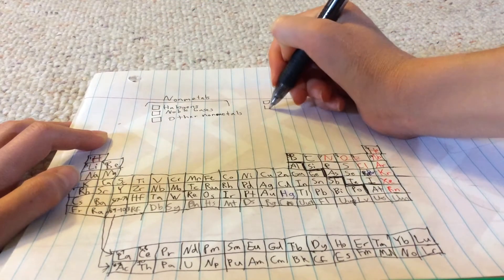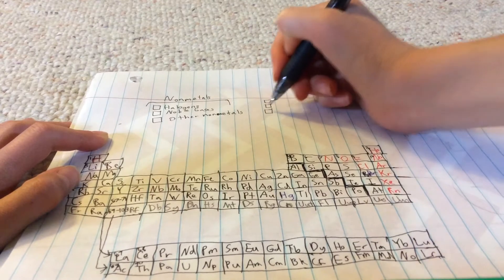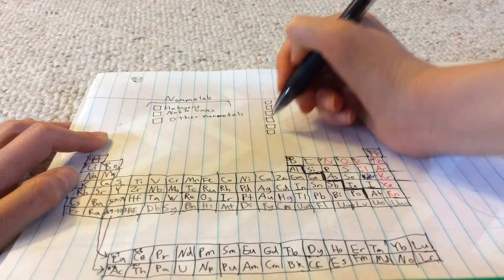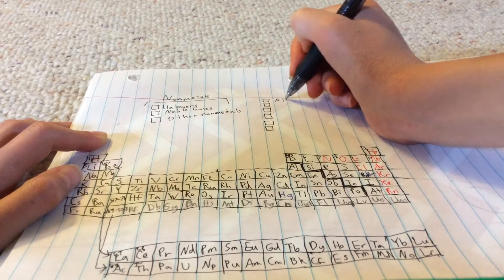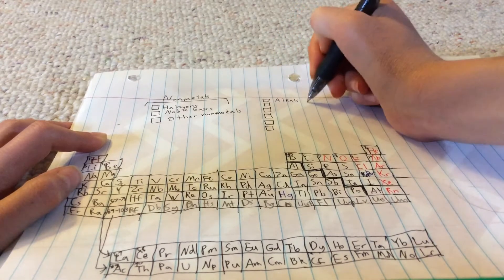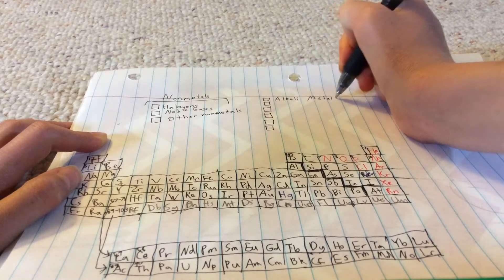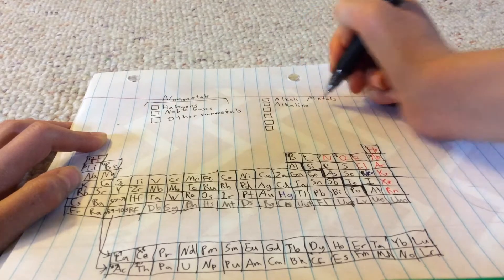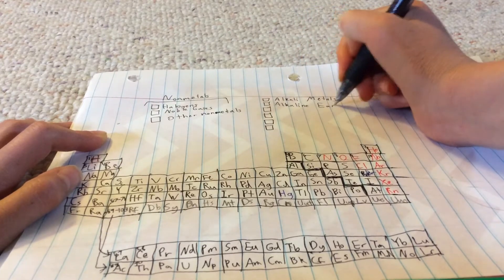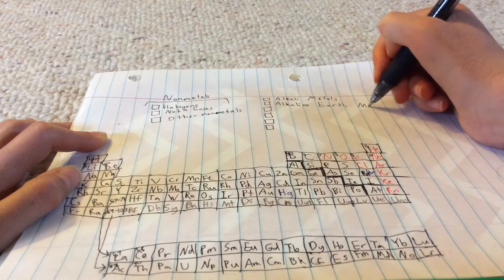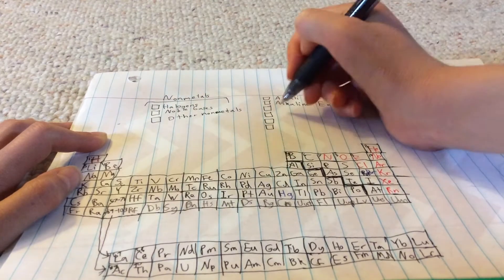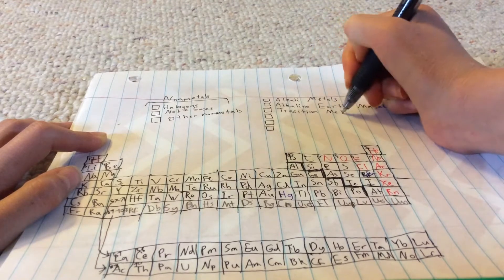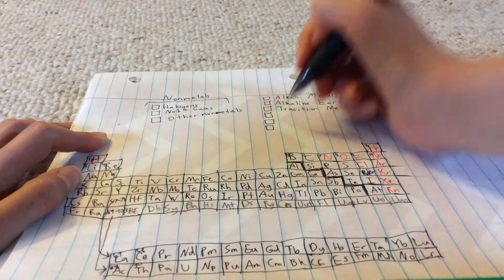We're gonna make one, two, three, four, five, six squares and all of them will be for something. This one's alkaline metals. This one will be alkaline earth metals. This one will be transition metals.